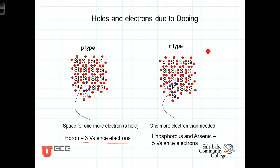N-type dopants have five valence electrons — one more than is necessary to fill the four covalent bonds. For example, phosphorus: its electrons are shown in blue, and there are five electrons associated with phosphorus. Four of them will bond with the nearest neighbors, but there is a fifth electron with no place to go. Lying out there, it is free to move and become a charge-carrying part of the current. Phosphorus and arsenic are common N-type dopants.